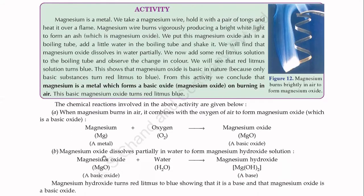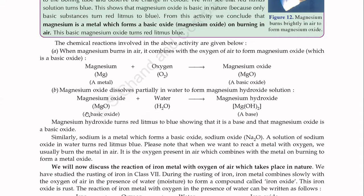The chemical reactions involved in the above activity are as follows — note these down in your notebook. When magnesium burns in air, it combines with the oxygen of air to form magnesium oxide, which is a basic oxide. The word equation is: magnesium + oxygen → magnesium oxide. The chemical equation is: Mg + O₂ → MgO. Mg is the chemical symbol for magnesium, O₂ is oxygen, and MgO is magnesium oxide — a basic oxide.